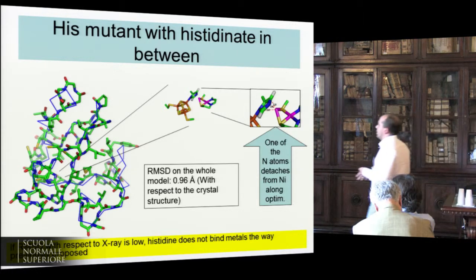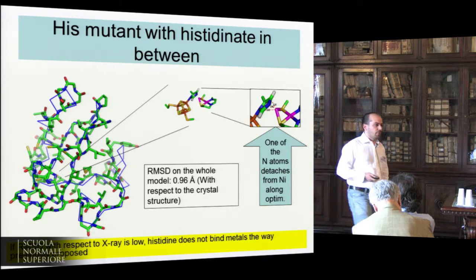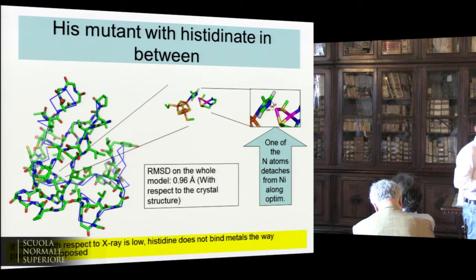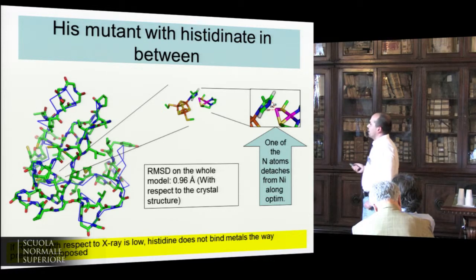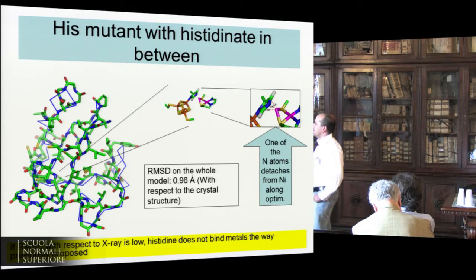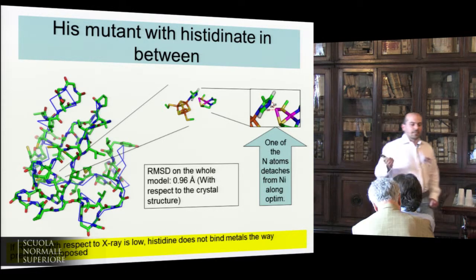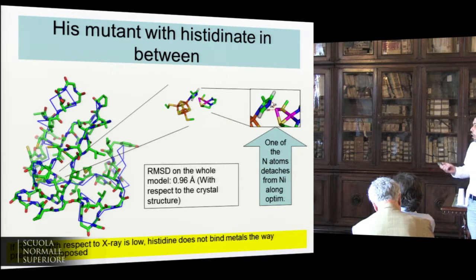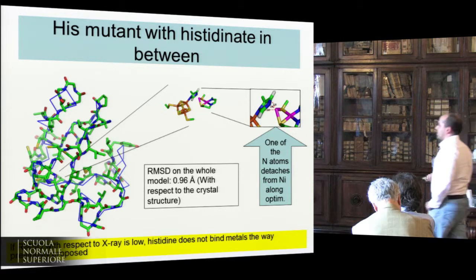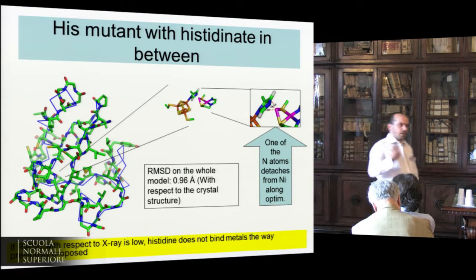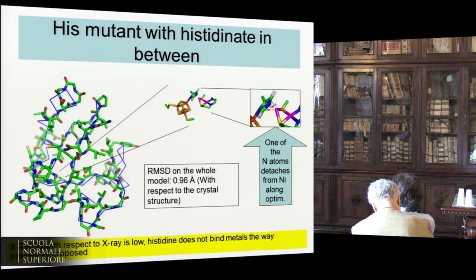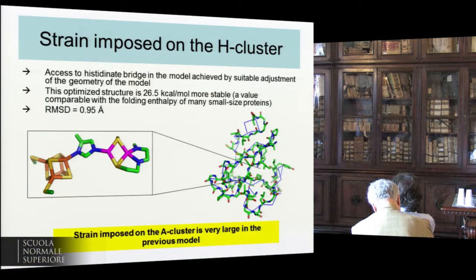We tried to fit the histidine in where there was a cysteine before in the wild-type form of the enzyme, and we find that the connectivity actually changes along the optimization. Basically, one of the nitrogens of the histidine detaches, and the pi system of the histidine goes on to interact with the nickel. This is a kind of coordination that nobody, as far as we know, has ever seen in biochemistry — so it's a little bit suspicious. We also considered the other rotamer of the histidine; the situation is rather similar, with another bond rupture. This second model is around 26 kcal/mol less stable than the previous one.